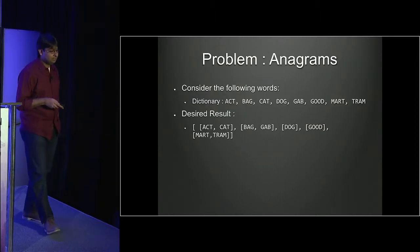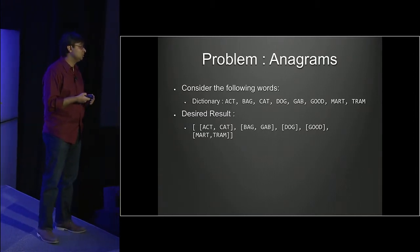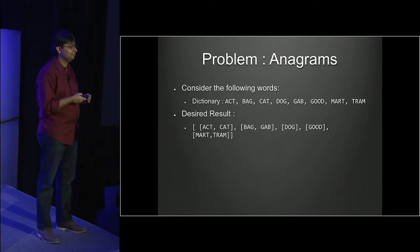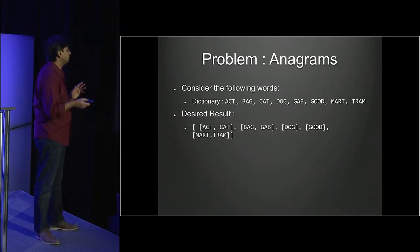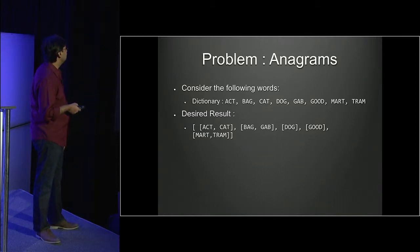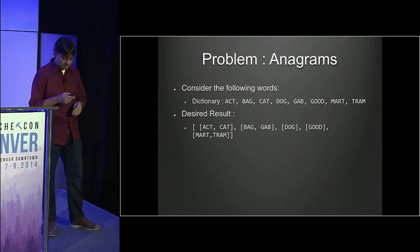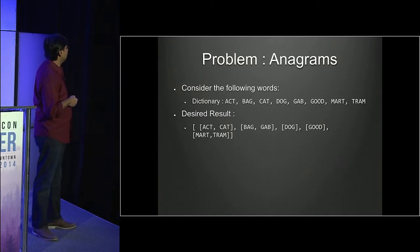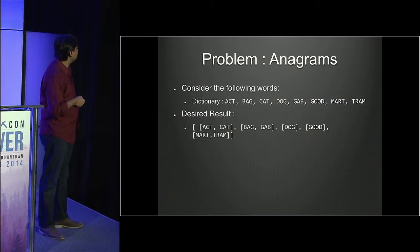Everyone starts off describing Hadoop with a word count example, but I'll start with a slightly different example — anagrams. Let's say we had a dictionary of words and we're trying to figure out groups of anagrams in this list. Just eyeballing it, we can see 'act' and 'cat' are anagrams. 'Dog' doesn't have anything to go along with it in this list. And there are a bunch of others. We want to group them essentially as groups.